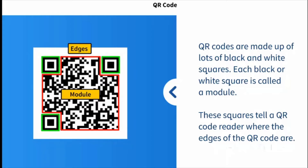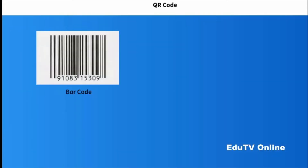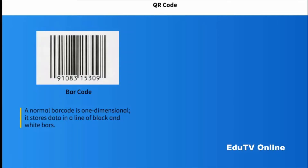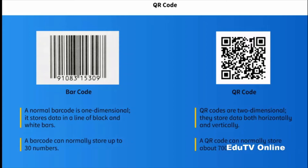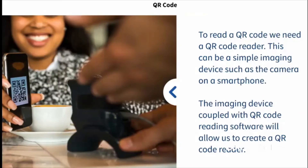A normal barcode is one-dimensional — it stores data in a line of black and white bars. QR codes are two-dimensional; they store data both horizontally and vertically, which means they can also be read horizontally and vertically by a QR code reader. A barcode can normally store up to 30 numbers, while a QR code can normally store about 7000.